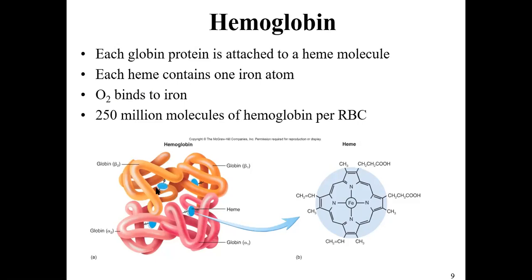Inside each protein subunit is what's called a heme group. The heme group is where you find an iron atom — this is where oxygen binds to the molecule. The function of hemoglobin is to bind to oxygen and allow it to be transported throughout the body inside of the red blood cells.